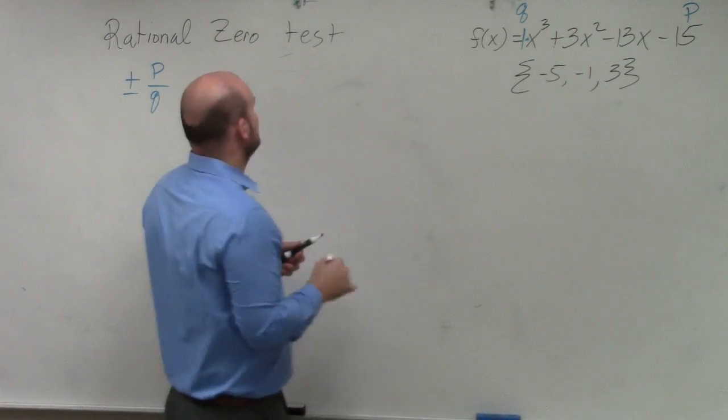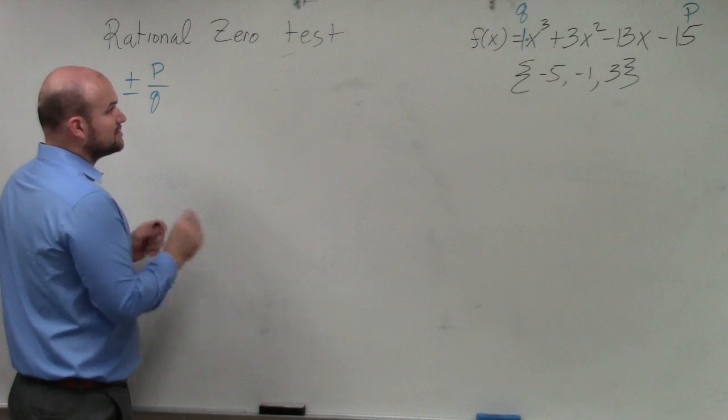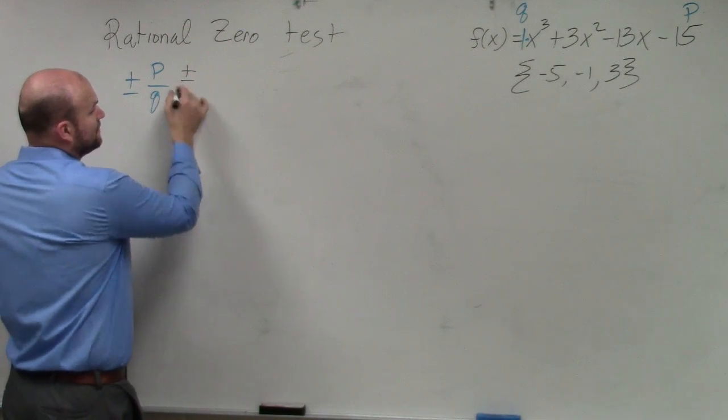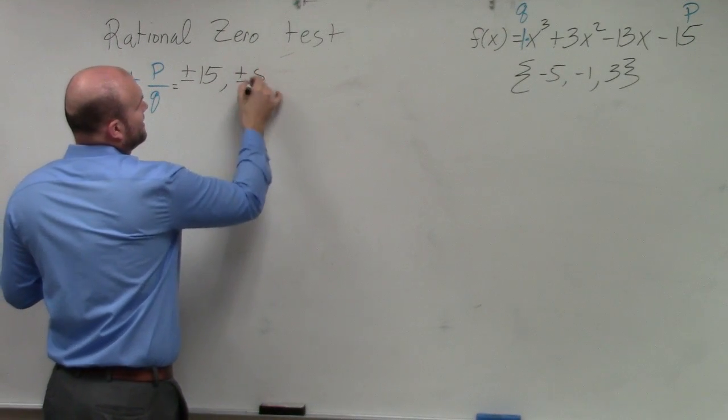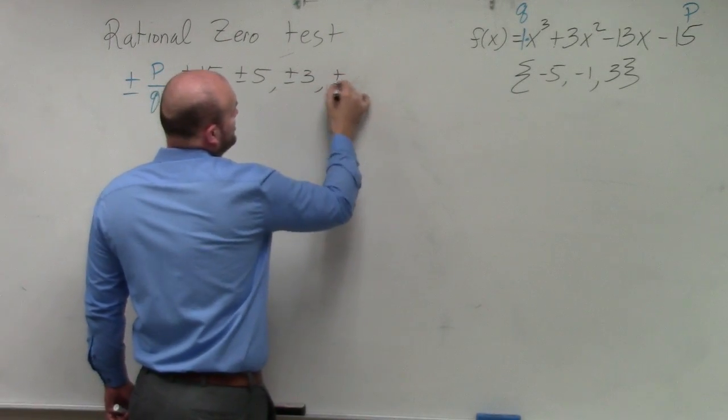Well in this example we have 15. So what we're going to do for P over Q is we're going to list all the factors of 15. You're going to use plus or minus as well. So it's going to be plus or minus 15, plus or minus 5, plus or minus 3, and plus or minus 1.